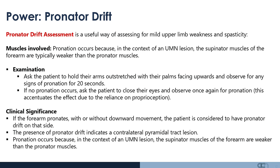An important test of power is whether there is a pronator drift — a useful way of assessing mild upper limb weakness and spasticity. In the context of an upper motor neuron lesion, the supinator muscles of the forearm are typically weaker than the pronator muscles. Ask the patient to hold their arms outstretched with palms facing upwards and observe for any signs of pronation for at least 20 seconds. If no pronation occurs, ask the patient to close their eyes and observe again, as this accentuates the effect by obliterating the reliance on proprioception. If the forearm pronates with or without downward movement, the patient is considered to have pronator drift, signifying a contralateral pyramidal tract lesion.